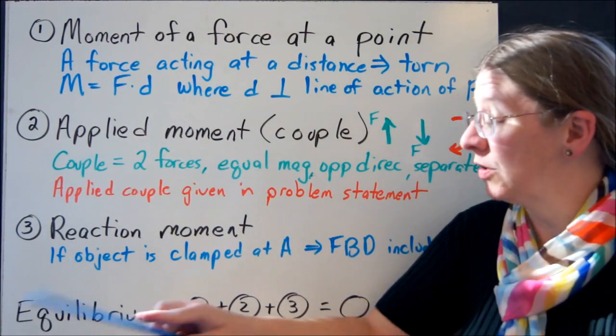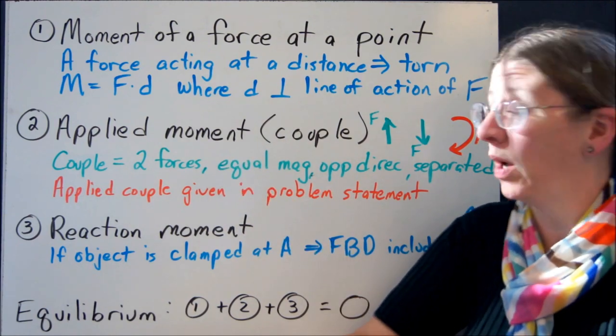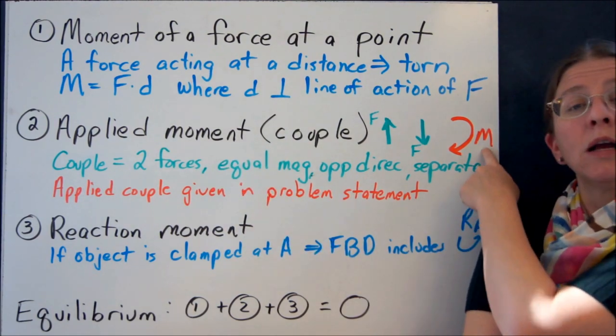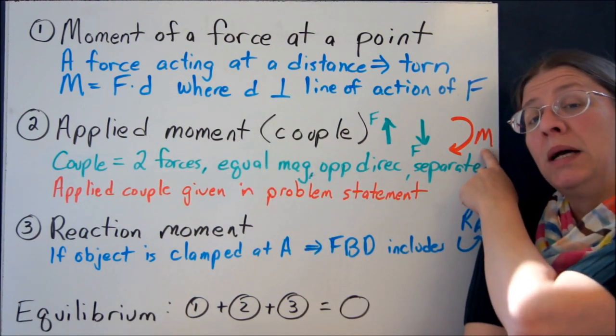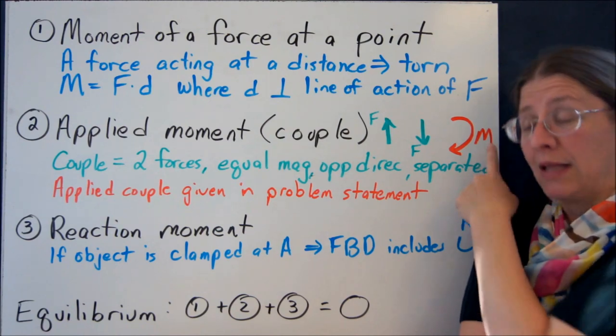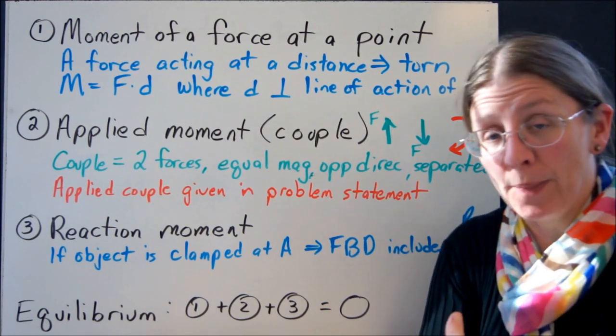The second way that we will use the word moment is to have an applied one. So if you have a problem that somewhere along in here has a curly arrow like that and an M, that's an applied moment that's given to you in the problem. It's also called a couple.